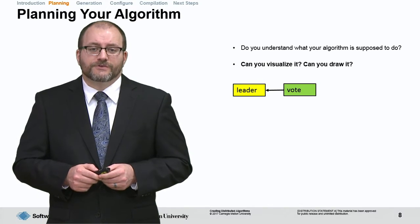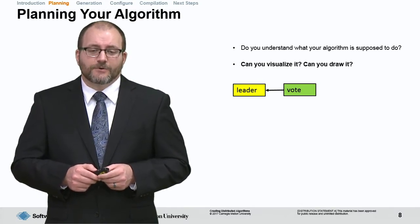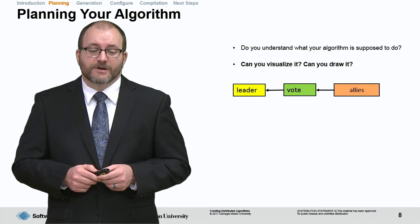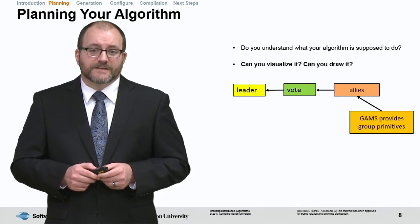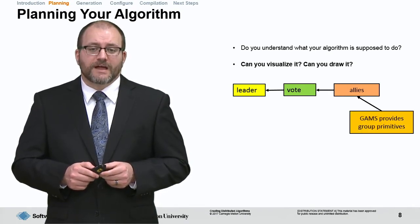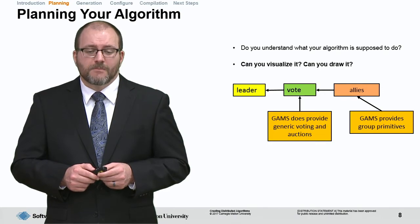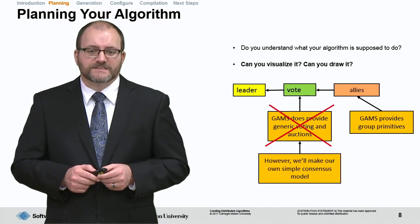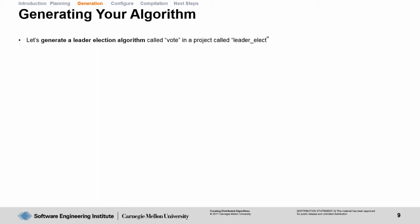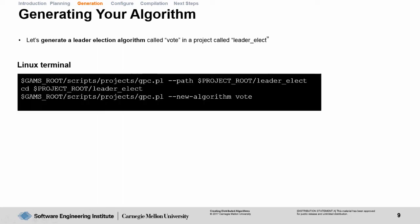Let's think of an algorithm that we're going to do in this module. We're going to have a leader voted for by all the agents participating among a group called allies. GAMS provides group primitives that we're going to use, so we don't have to create our own group primitives. GAMS also provides some basic generic voting and auction techniques, but we're going to create our own simple consensus model. Let's generate a leader election algorithm that we just planned called vote in a project called leader elect. Open your Linux terminal, use the gpc.pl to create a new project called leader elect. Then, change directory into that leader elect project and create a new algorithm called vote.